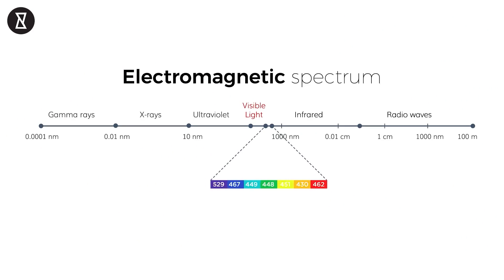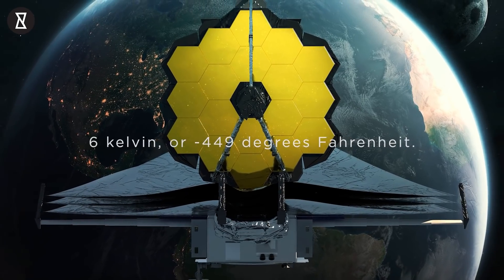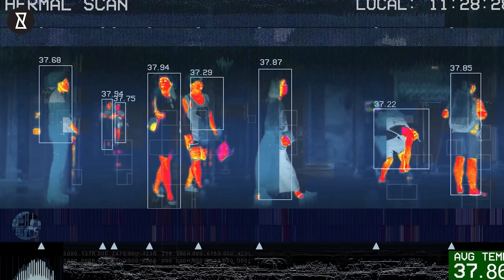Its mid-infrared instrument, for instance, is designed to observe the middle of the infrared spectrum at just 6 Kelvin, or minus 449 degrees Fahrenheit. The instruments have to be this cold since warm objects radiate infrared light or heat.